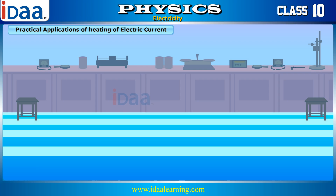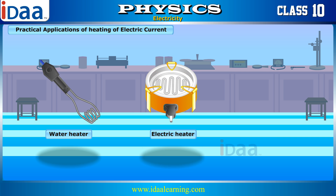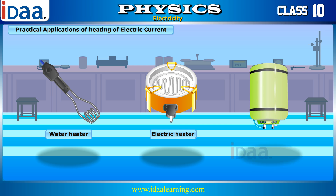Practical applications of heating of electric current. The heating effects of electric current have been applied in designing many useful appliances. Some of them include the electric stove, the electric heater, geyser, etc. The electric bulb is another example — the bulb's filament reaches such a high temperature that it starts emitting light.